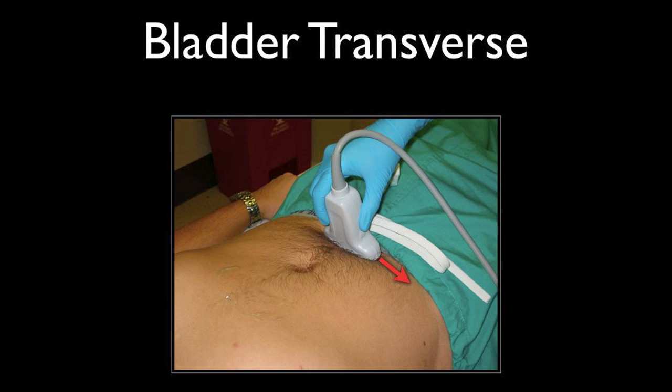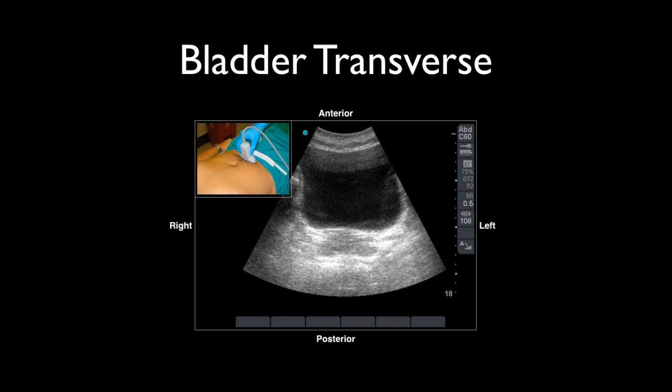For the bladder, you want to put your probe over the suprapubic area and tilt downwards just a bit. You're going to be able to visualize the bladder with your indicator towards the left — that's going to be the right side of the patient. You'll see that cube or square structure, and in this case the area underneath the bladder is the prostate gland.